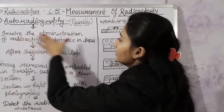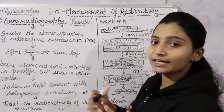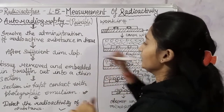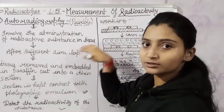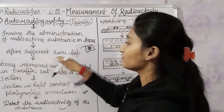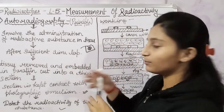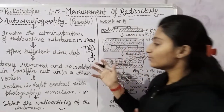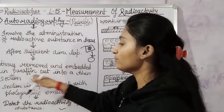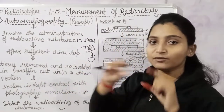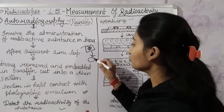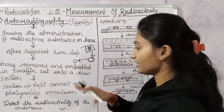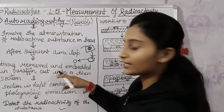First, it involves the administration of radioactive substance in tissue. We will administrate the radioactive substance into the tissue and leave it for a sufficient lapse of time. After that, we will extract the tissue. The tissue is then removed and embedded in paraffin. We will form a paraffin layer, preserve it, and make a thin section of paraffin.